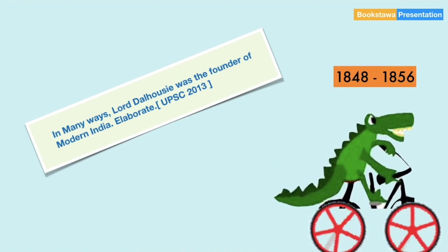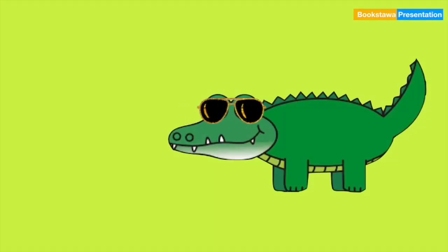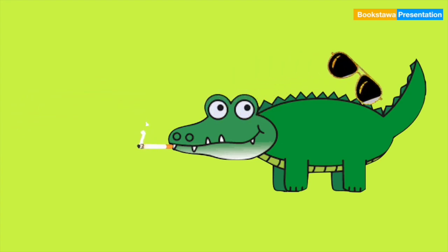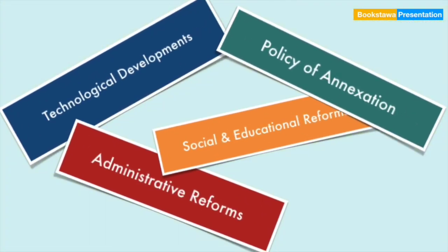Lord Dalhousie was the Governor General of India from 1848 to 1856. He was the youngest Governor General of India. During his tenure, on one hand there was rapid modernization in India, and on the other hand he had set a fire in the country with his annexation policy. In this video we will discuss the technological development, administrative reforms, social and educational reforms, as well as Dalhousie's policy of annexation.